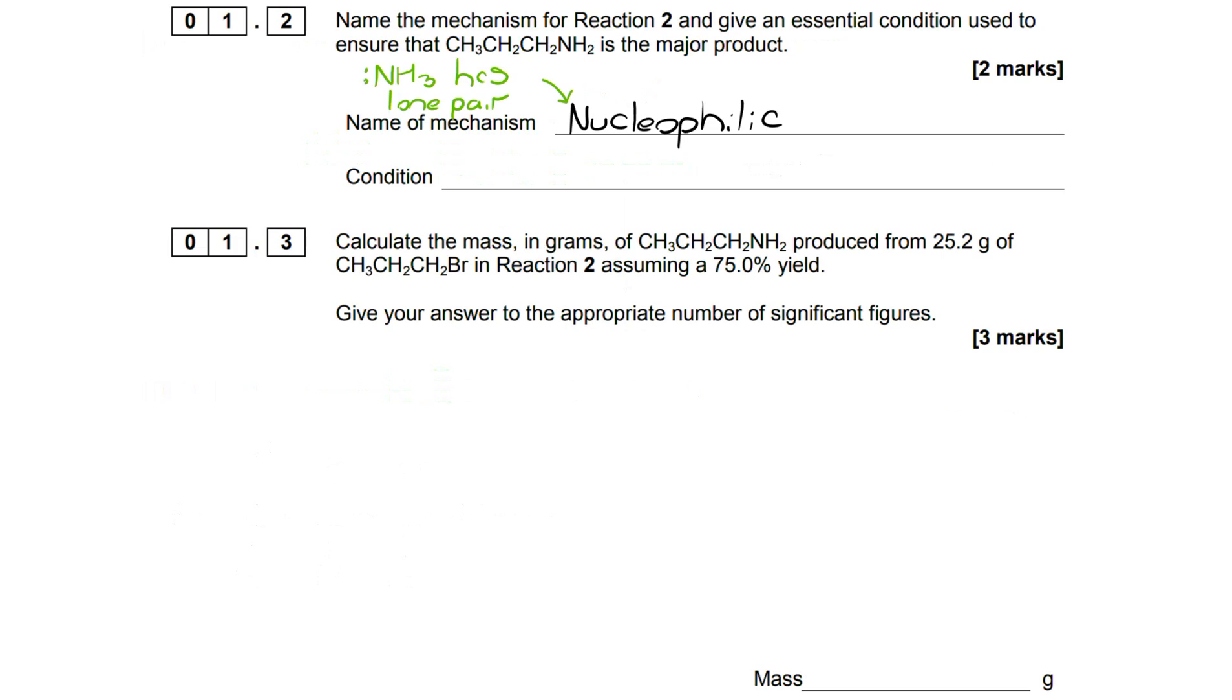If we look at reaction 2 we have NH3. NH3 has a lone pair which makes it electron rich so we're thinking it's going to be a nucleophile. We also know that we're replacing a Br with an NH2, so if we're replacing we're substituting. What we have is nucleophilic substitution.